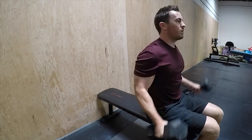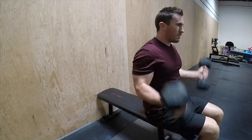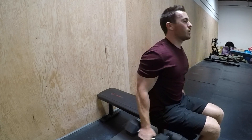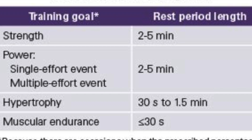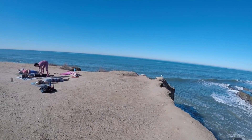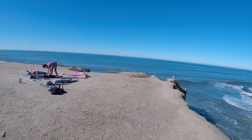Lastly, step seven — rest time. To produce maximal strength and power, rest periods should be two to five minutes. For hypertrophy, thirty seconds to one and a half minutes. For endurance, rest should be less than or equal to thirty seconds.